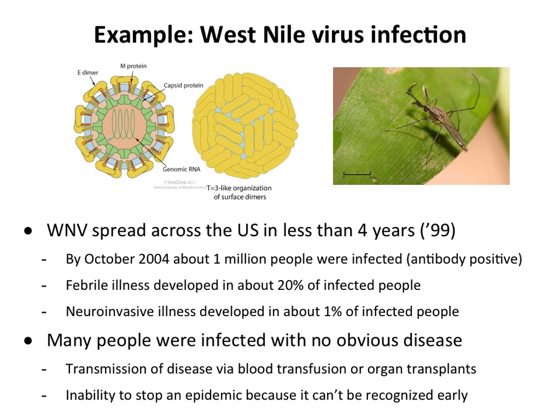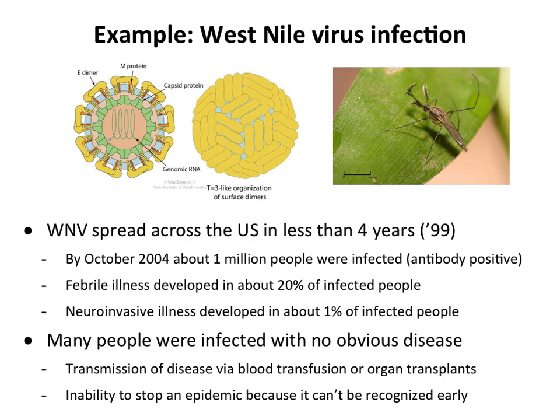This is important because if these inapparently infected people give blood — and West Nile spreads in the blood — unless the blood is checked for the virus, it will spread to recipients. About 20 percent could get sick and one percent could develop neuroinvasive illness. As soon as we knew West Nile was in the US we had to start checking the blood supply, and today blood is checked for dozens of different viruses.